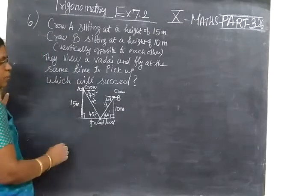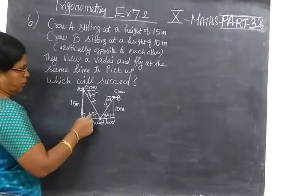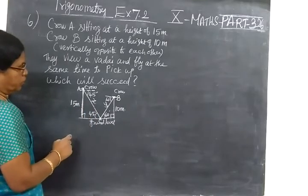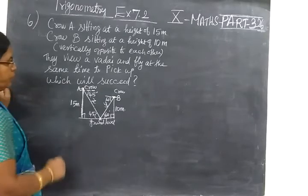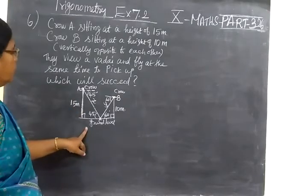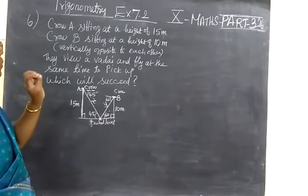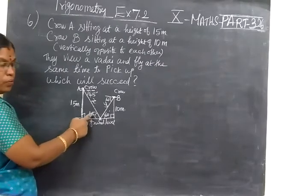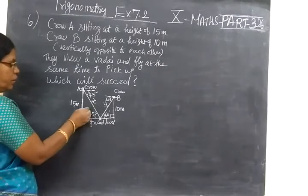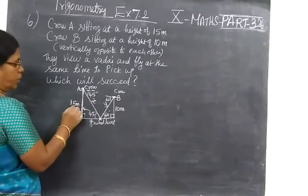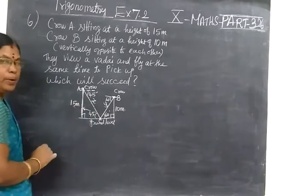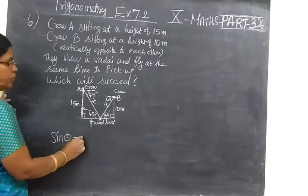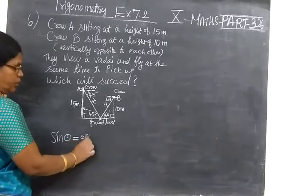Now we see the trigonometric ratio. This is hypotenuse. Angle only is given. Ground level is 15 meters. This is given, so this is opposite side. 45 degrees is here, just the opposite. This is opposite side. So connecting opposite side and hypotenuse, we are taking sin theta. Sin theta equals opposite by hypotenuse.